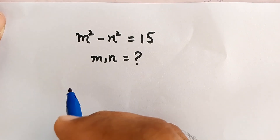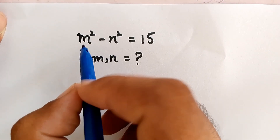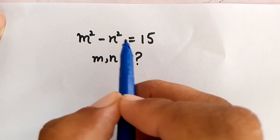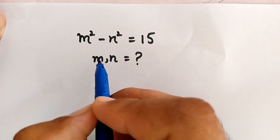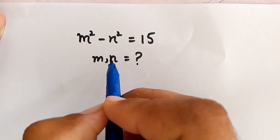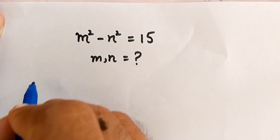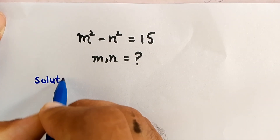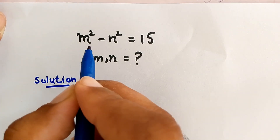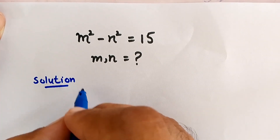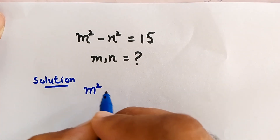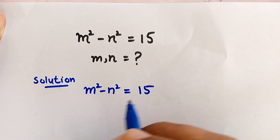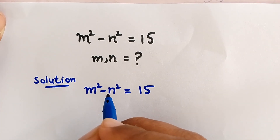Hello, you are welcome. Today we have to solve an interesting math question: m squared minus n squared is equal to 15, and we have to find the value of m and n.